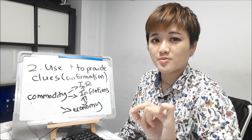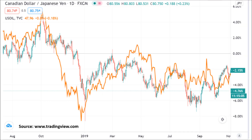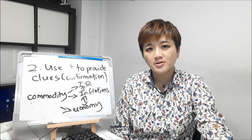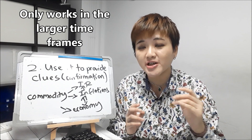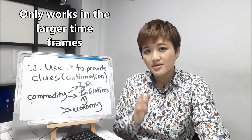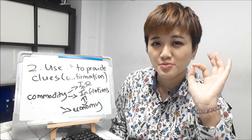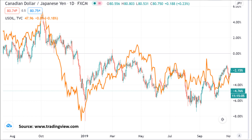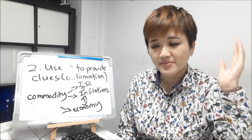Another example: Canadian dollar-yen versus oil prices. One of the main exports of Canada is oil, so if you plot the two charts together, you realize they tend to move in the same direction — most of the time, but not all the time. One thing about correlation is that it only works well in larger timeframes. If you look at smaller timeframes — minute or hourly — the relationships become random. If you look carefully, you'll notice that oil prices tend to move first before Canadian dollar-yen makes its move. There are many reasons why they're correlated, but I won't go into detail for this video.